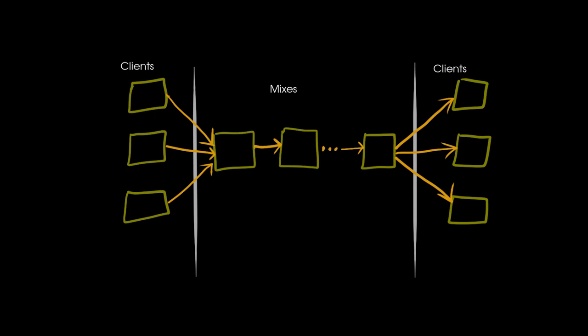We can expand this diagram. These two vertical lines represent the two points in the network that the adversary must watch to perform this attack. One of the clients on the left is sending a message to one of the clients on the right. We don't actually have to watch the whole mixed network. We just watch all the clients that talk to the network.